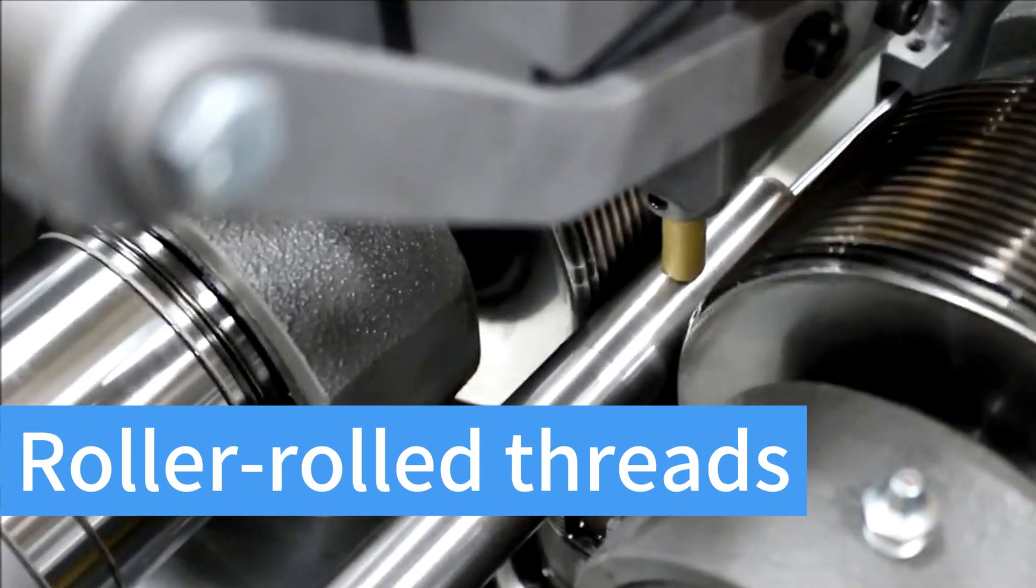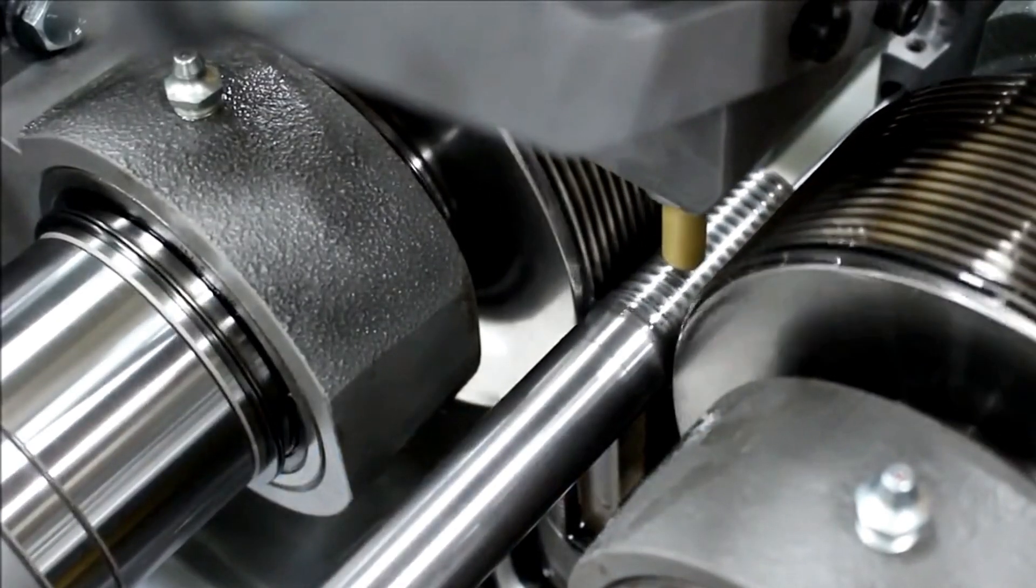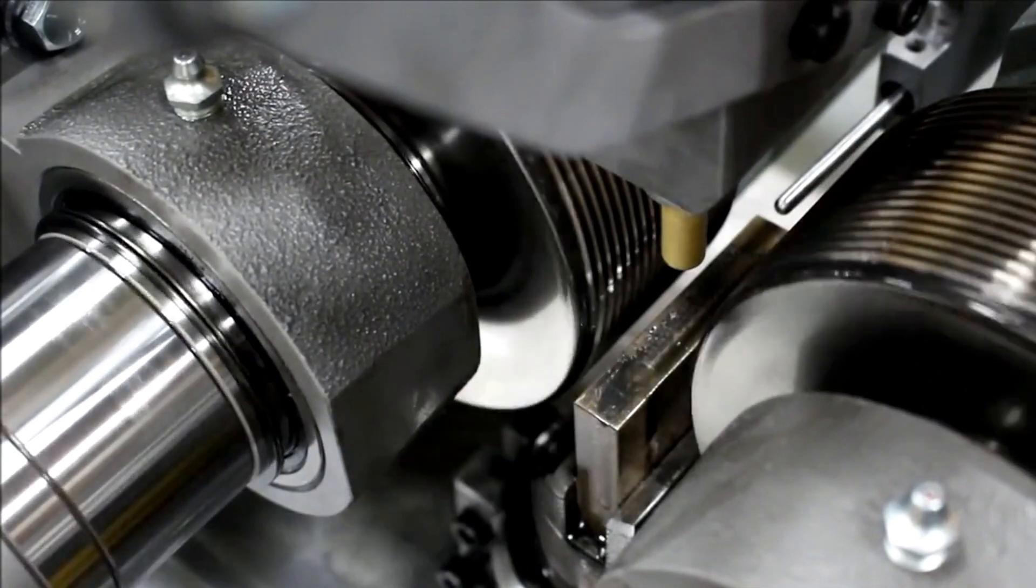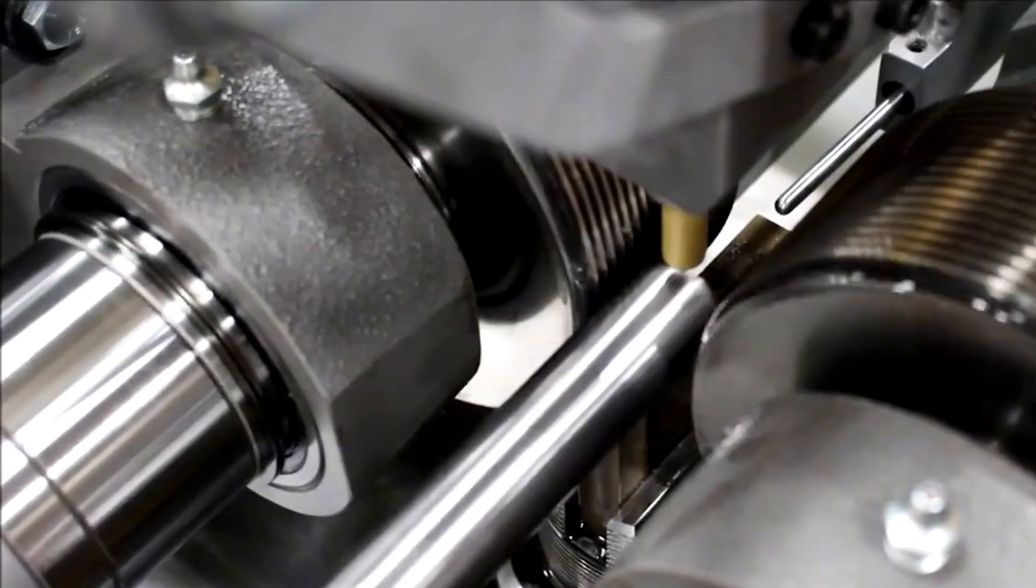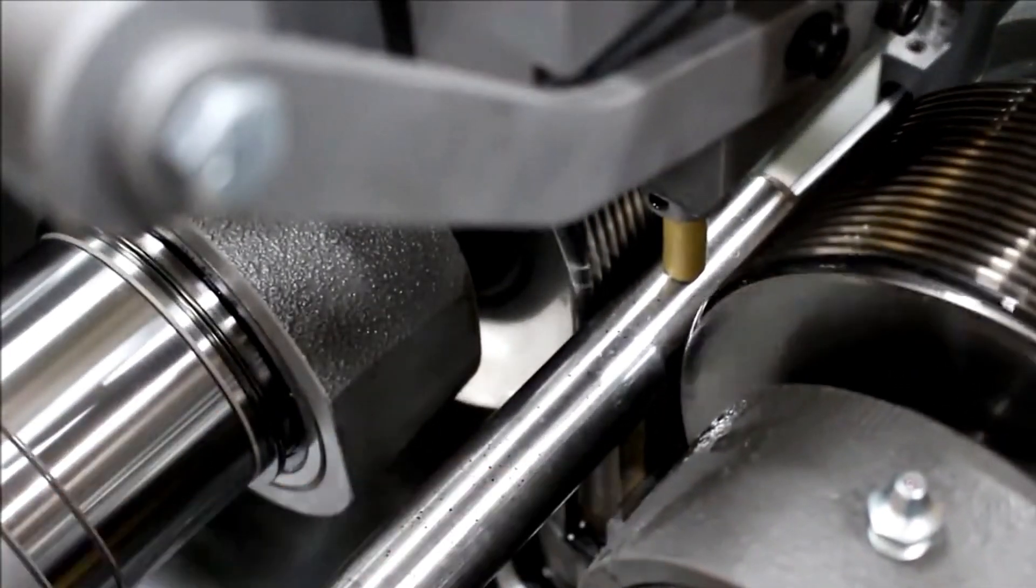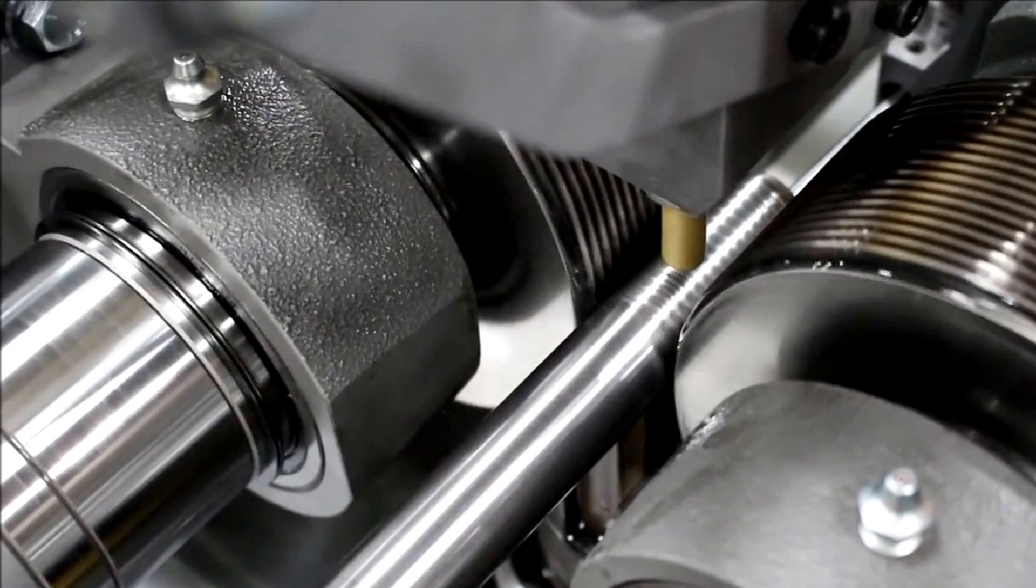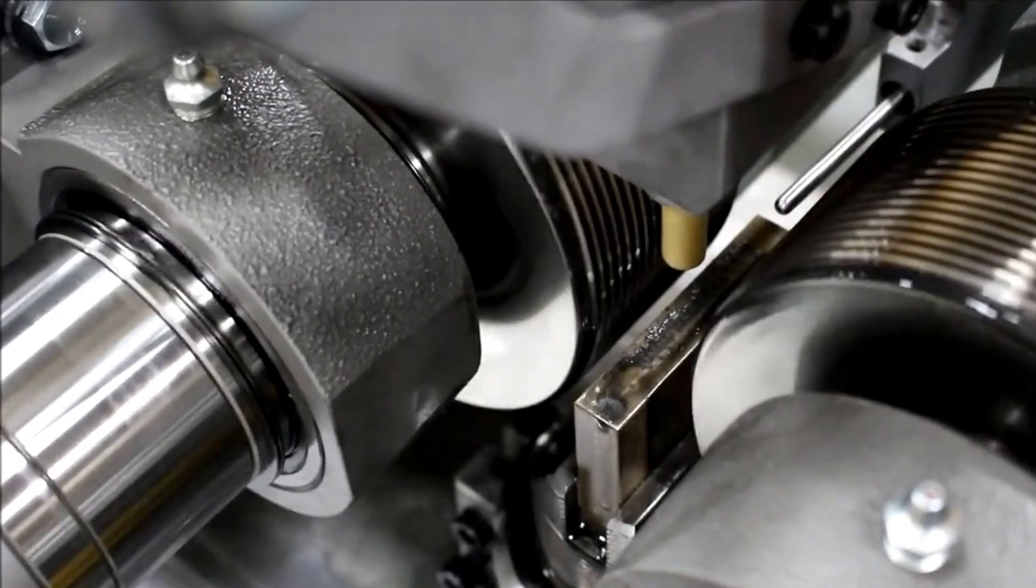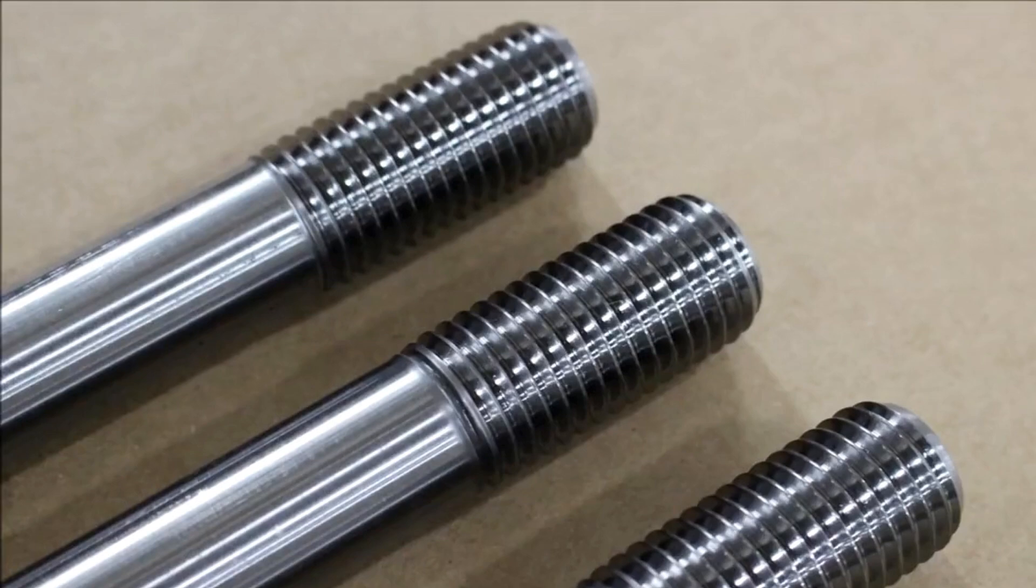Roller rolled threads. Roller rolling threading uses a molded rolling die to plastically deform the workpiece. It is a chipless method of obtaining a threaded surface. The video demonstrates the double roller rolling method. Rolled threads are characterized by high finish, high strength, and high precision, suitable for batch production.